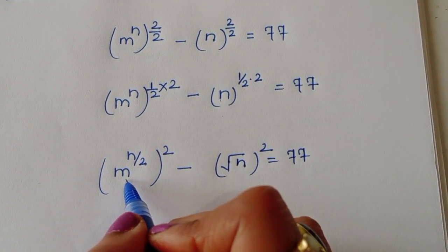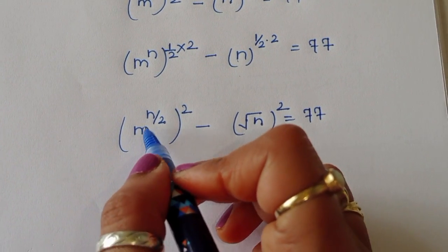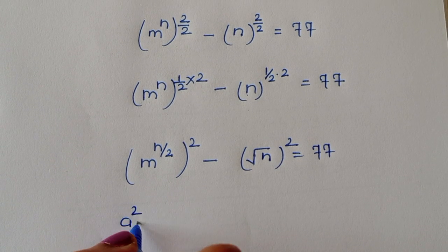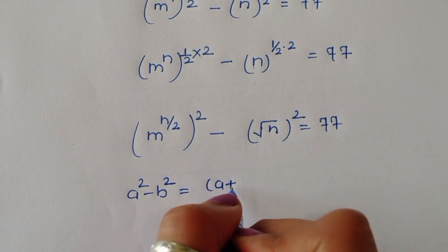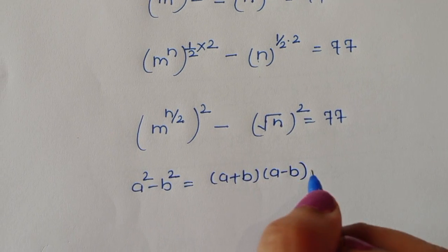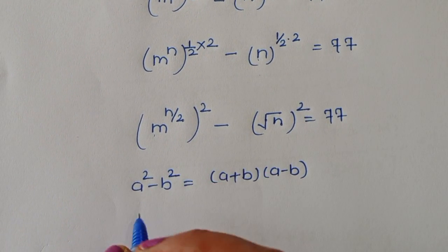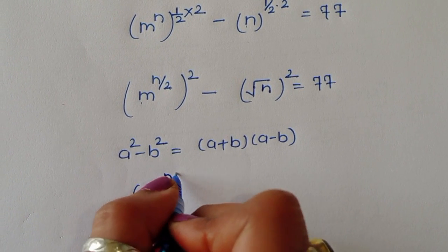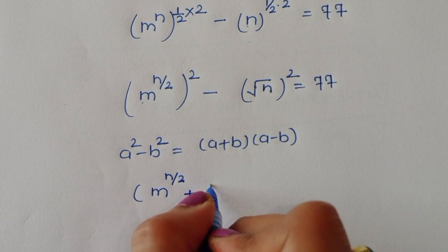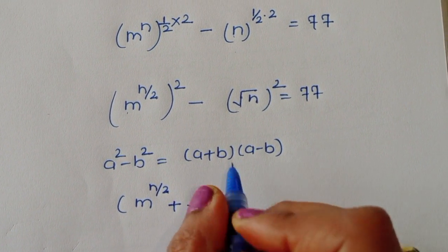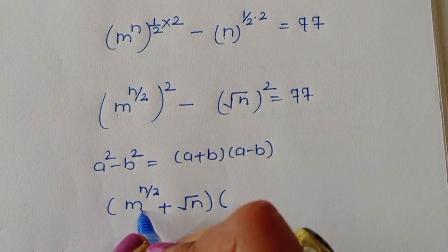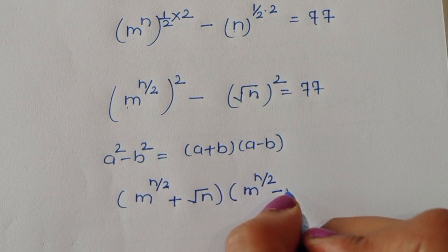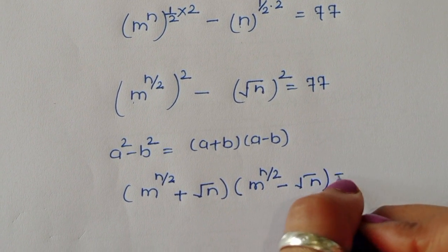Now this is in the difference of squares form: a squared minus b squared, where a is m power (n/2) and b is square root of n. Applying the formula a squared minus b squared equals (a plus b)(a minus b), we get: m power (n/2) plus square root of n, times m power (n/2) minus square root of n, equals 77.